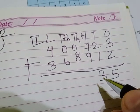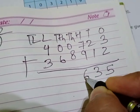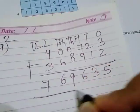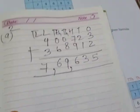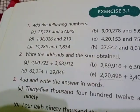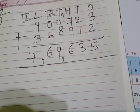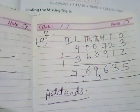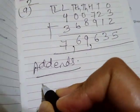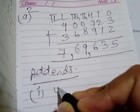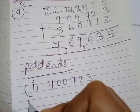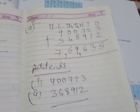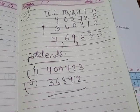Counting after nine: ten, eleven, twelve, thirteen, fourteen, fifteen, sixteen — one carried here. Eight plus one is nine, then six, four, three, seven. This is your sum obtained. The addends are: first addend is four lakh seven hundred twenty-three, and second addend is three lakh sixty-eight thousand nine hundred and twelve.